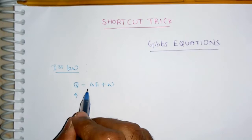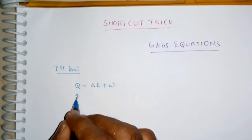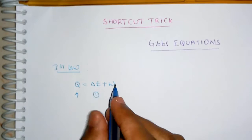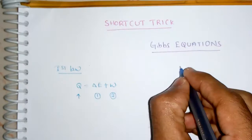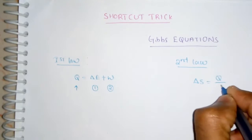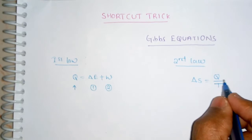The first law of thermodynamics is Q = ΔE + W, where Q is the amount of heat supplied to the system. It can be utilized in two ways: first, to change the internal energy of the system, and second, to do some external work. The second law of thermodynamics states that ΔS = Q/T — change in entropy equals the amount of heat supplied divided by temperature.